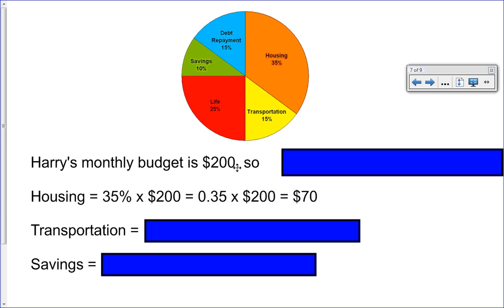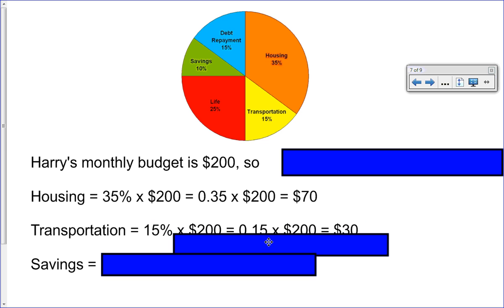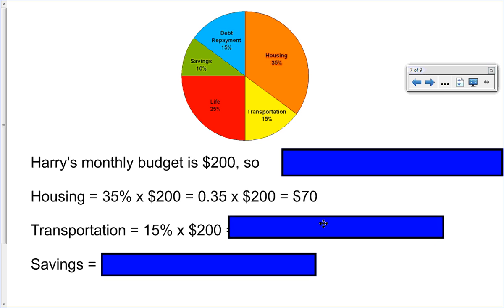Just pause the video for 30 to 60 seconds and try calculating how much he spends on transportation. Once you've worked out an answer, hit the play button. Okay, so hopefully you tried this on your own. We're going to use a similar method: 15 percent times 200. Change that to a decimal and multiply.